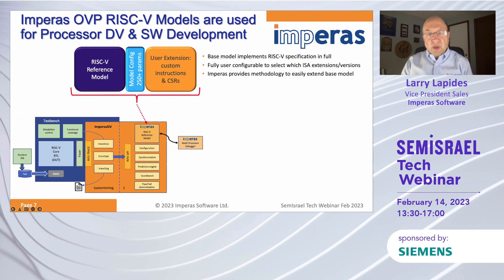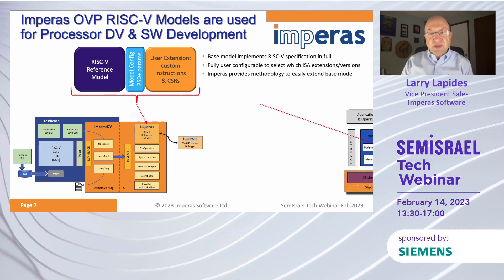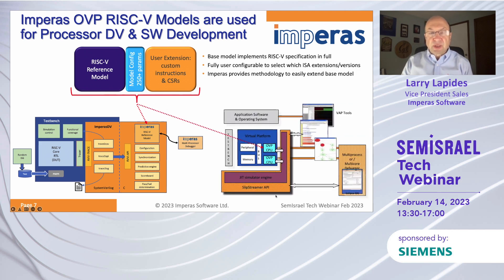The model gets used for processor verification — here we have the RTL for the RISC-V processor and the Empiris reference model and verification IP. It also gets used for software development and architecture exploration in a virtual platform — the Empiris virtual platform environment. I'm going to talk about all three of these areas: the models, verification, and software development and architecture exploration.